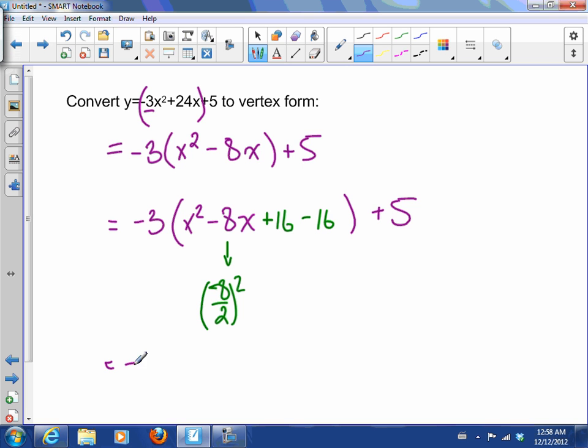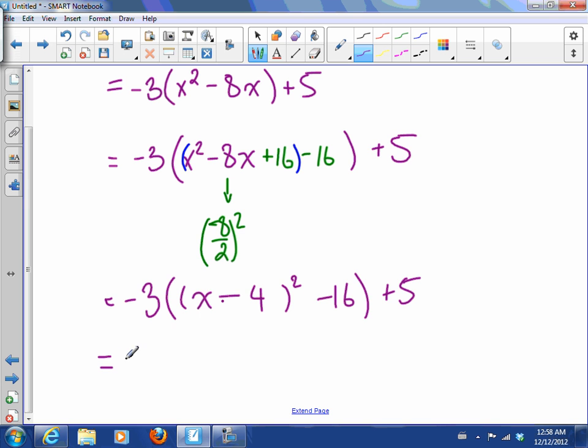So now let's continue. I've got my -3, and here I've got a perfect square, so that'll be (x - 4)², and then I have my +5.